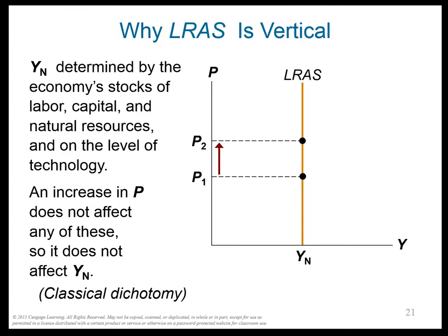Any event that changes labor, capital, human resources, or technology will shift the long-run aggregate supply curve. For example, immigration increases labor, which raises output — the LRAS shifts right. Anything that changes L or the natural rate of unemployment, like immigration, baby boomers retiring, or government policies reducing the natural unemployment rate, will shift the LRAS.